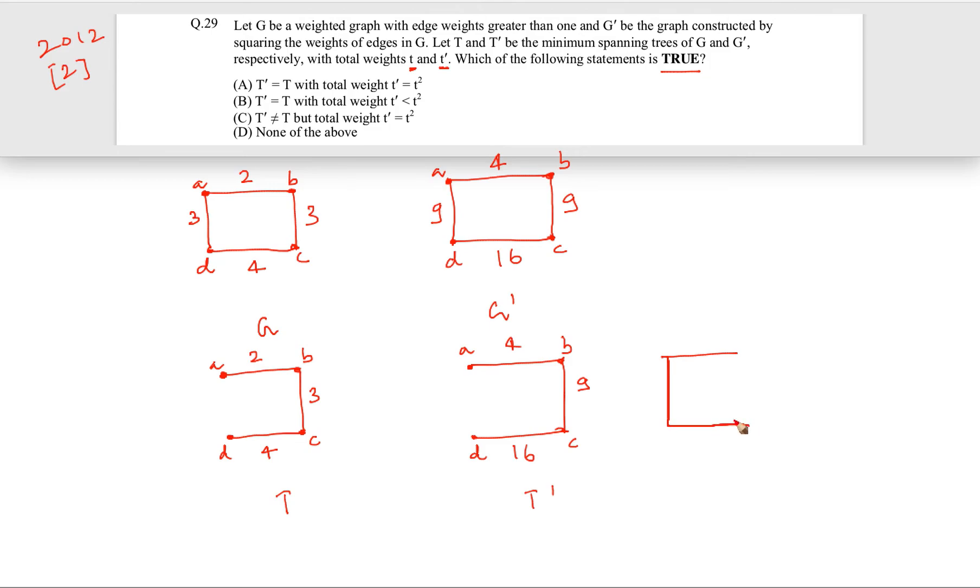So 4, 9 and 16, this is A, B, C and D, and we can see that now T prime is not same as T. The selected edges are different. That is why we cannot always say that T is equal to T prime or T is not equal to T prime.